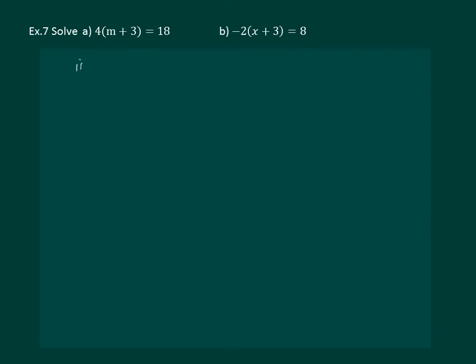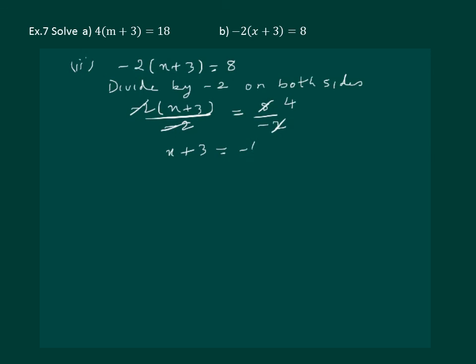Similarly, let us solve the second part of the same question: minus 2 into x plus 3 equal to 8. Let us divide by minus 2 on both sides. We will get minus 2 into x plus 3 whole divided by minus 2 equal to 8 by minus 2. Minus 2 and minus 2 get cancelled and here we are left with minus 4. So x plus 3 equal to minus 4. Now let us transpose plus 3. It becomes x equal to minus 4 minus 3. So x is equal to minus 7 is the required answer.